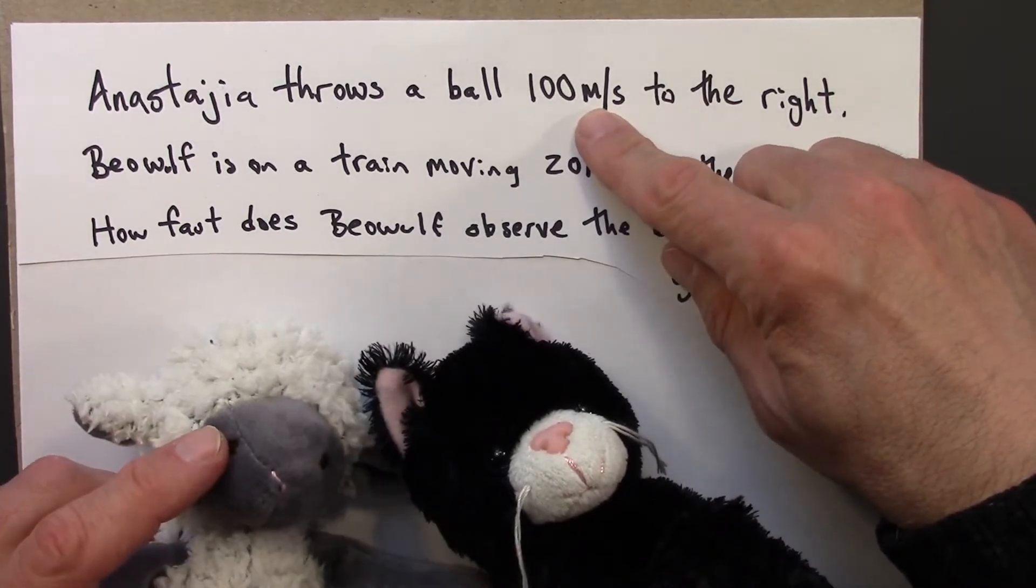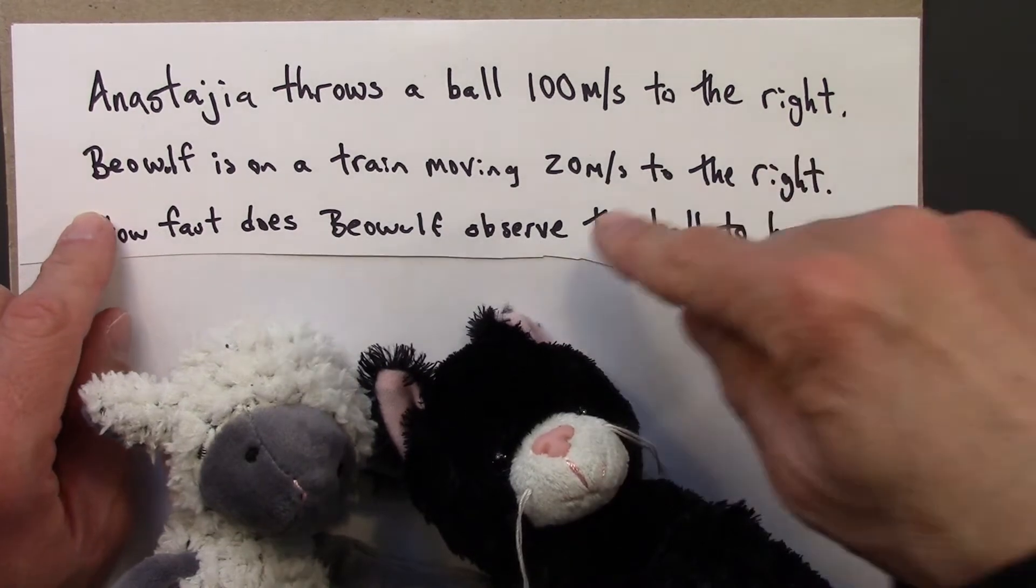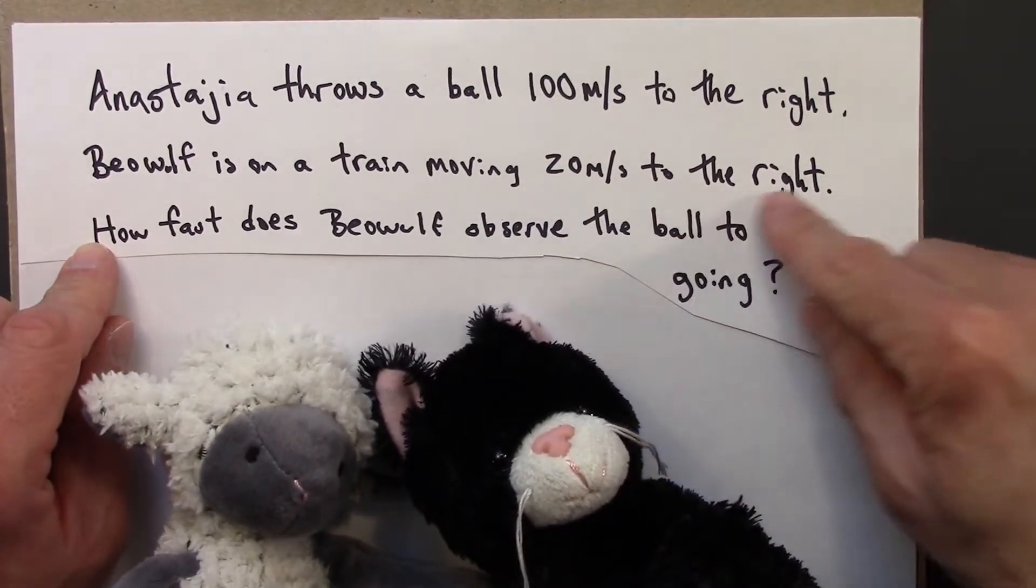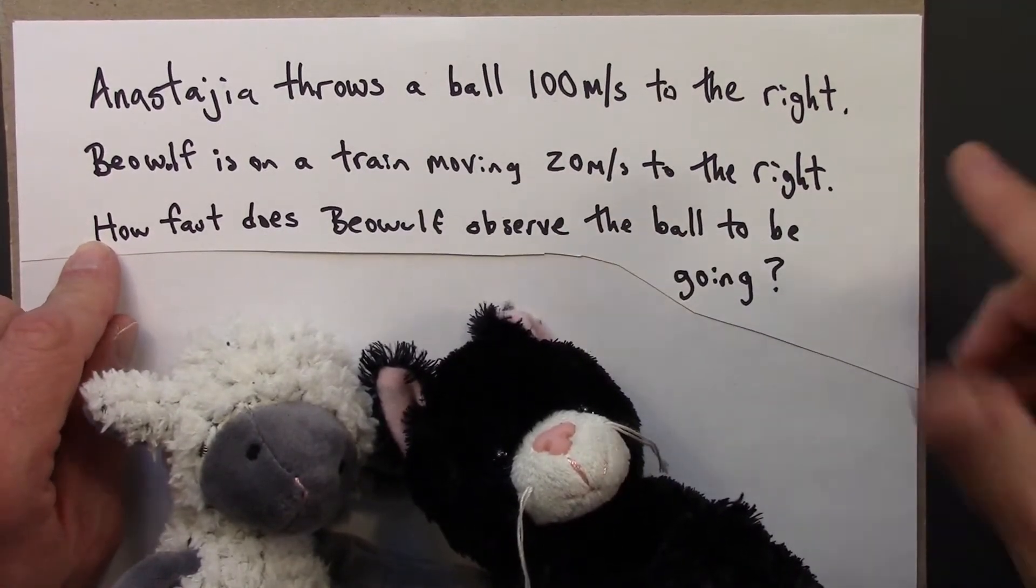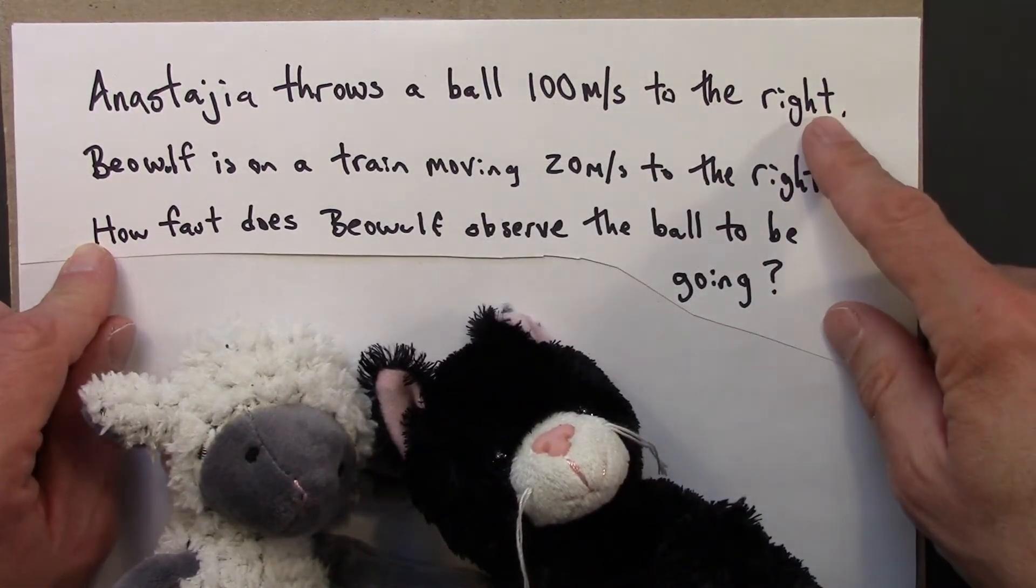This is 225 miles per hour. So Anastasia throws the ball and Beowulf is on a train moving 20 meters per second to the right. And we want to know according to Beowulf what does he observe the ball velocity to be.